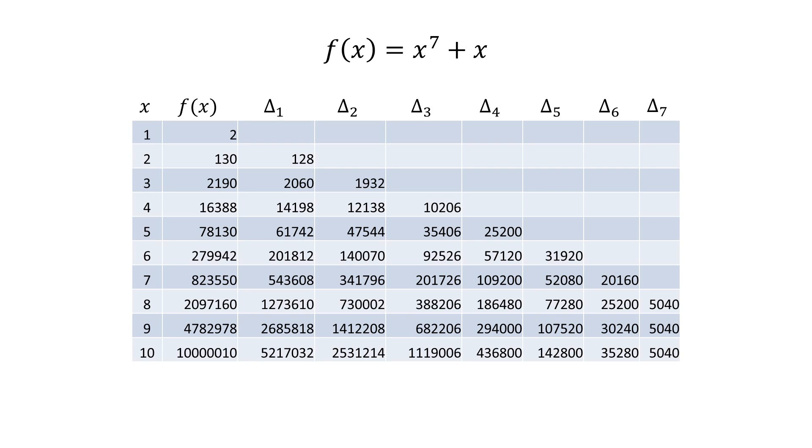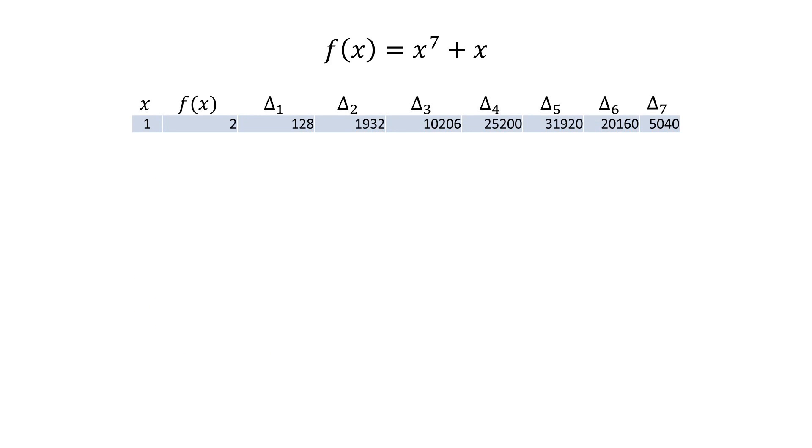To compute a sequence of values for this polynomial using the method of finite differences, we would follow the same procedure as before. We precompute the first value in each column, then arrange these values into a new table, and start adding.